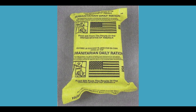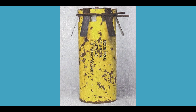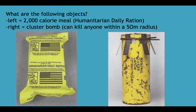Now compare these two objects. The one on the left is a 2,000-calorie meal — a humanitarian daily ration, as shown on the package. The one on the right is a cluster bomb, which can kill anyone within a 50-meter radius. They look a little similar, don't they?